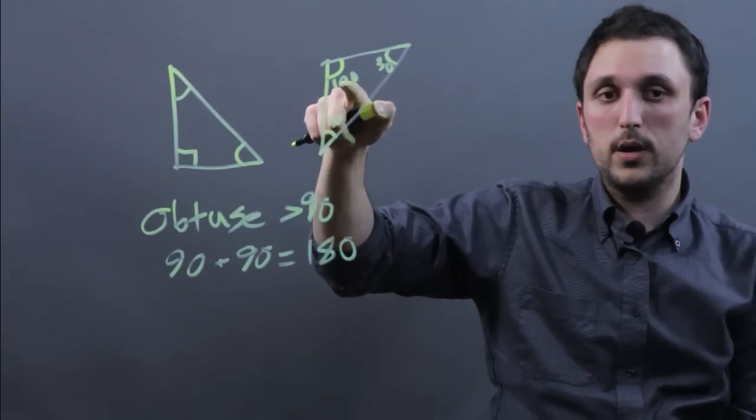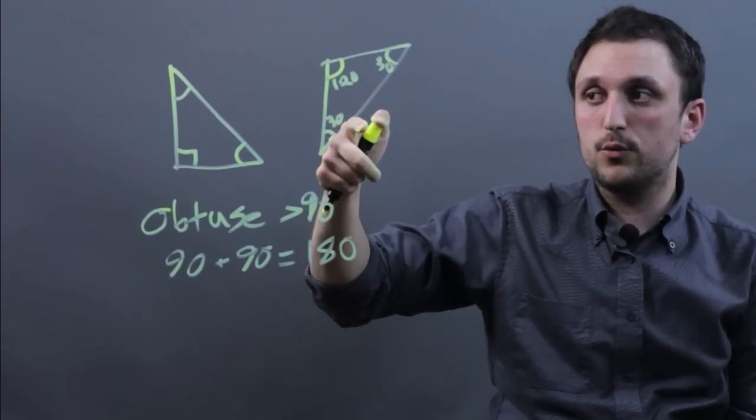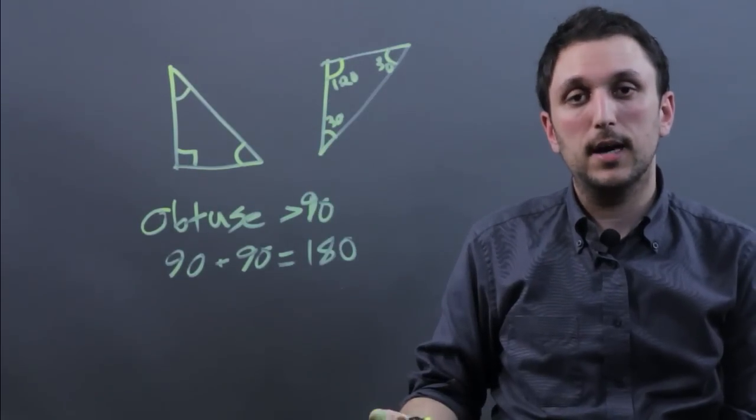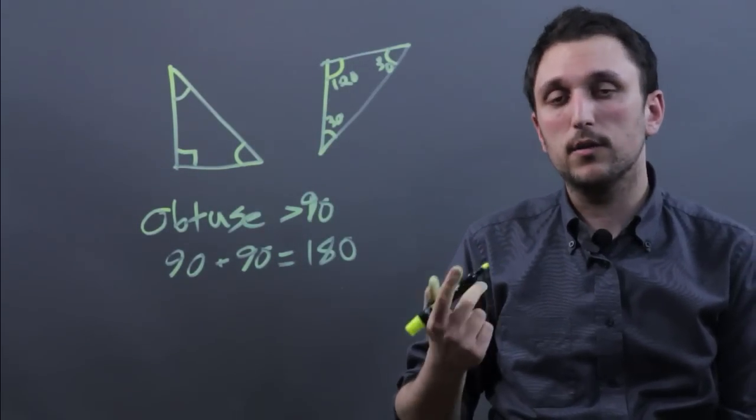If you had two 120s, you'd have 240, which you then need negative 60 for the other angle and that's impossible. The smallest angle measure is zero degrees.